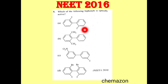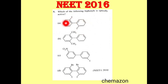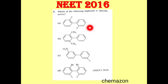First we have to apply our chirality condition for biphenyls: out of the four ortho positions, at least three or all four ortho positions should be substituted with larger groups like carboxylic acid, nitro group, or bigger halogen groups like iodine and bromine.